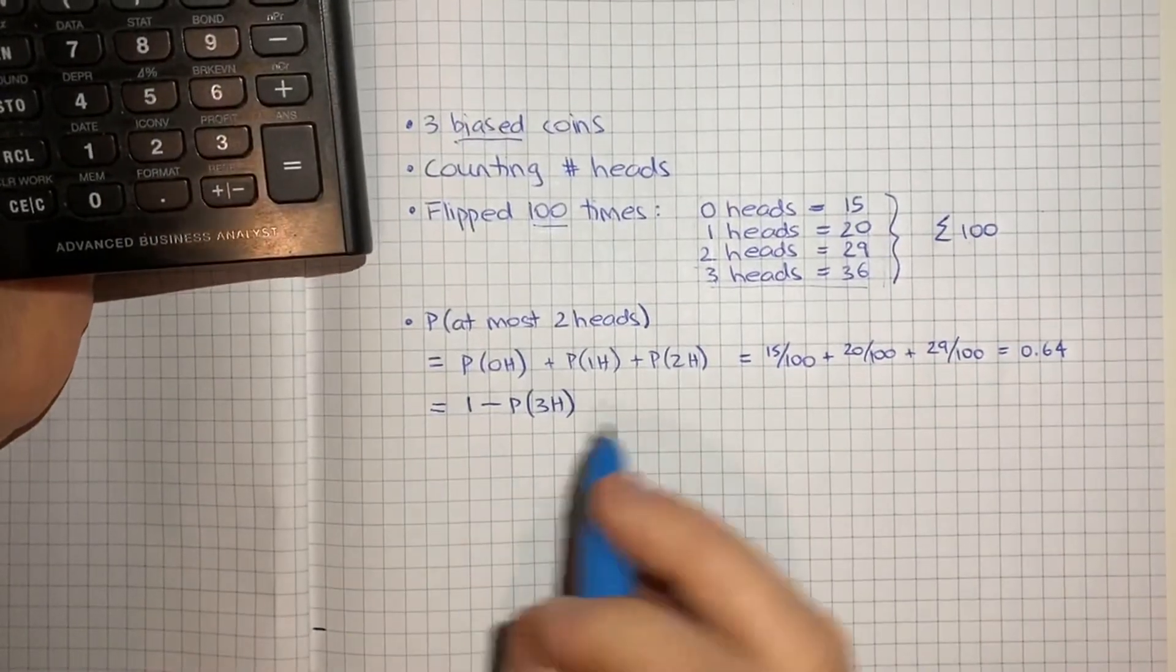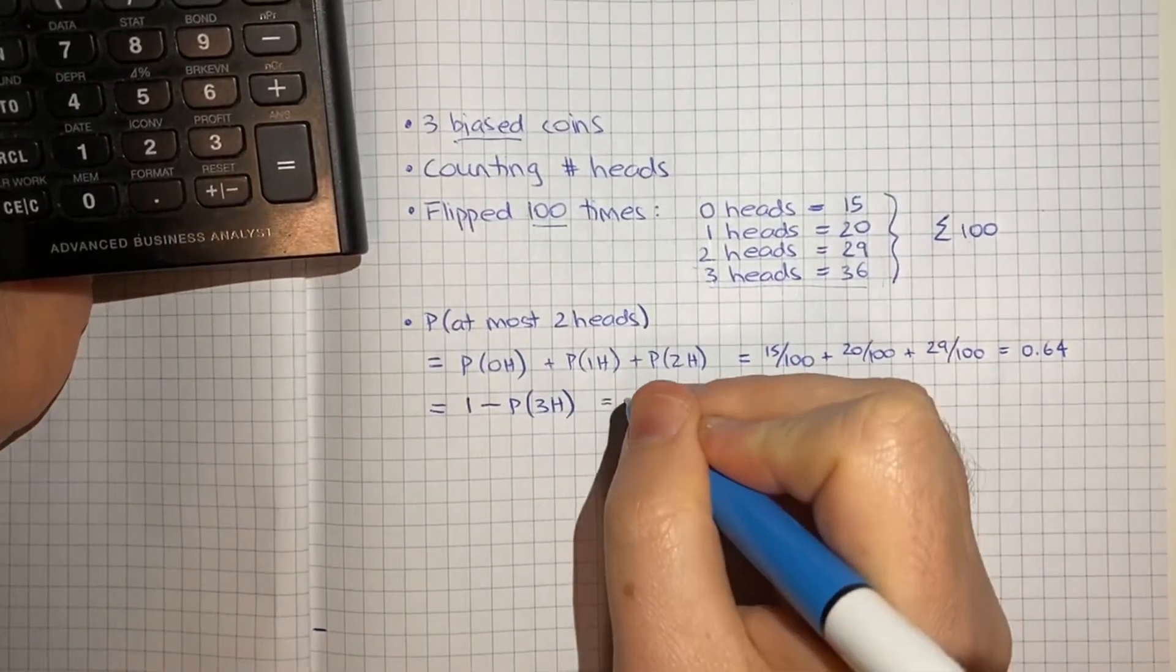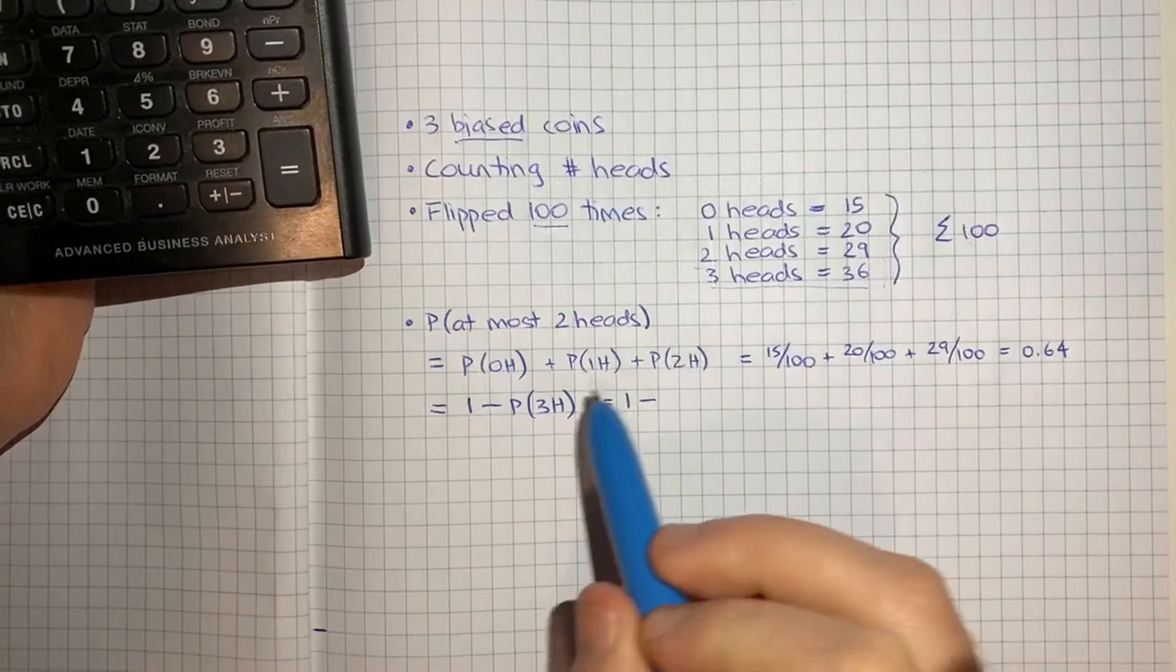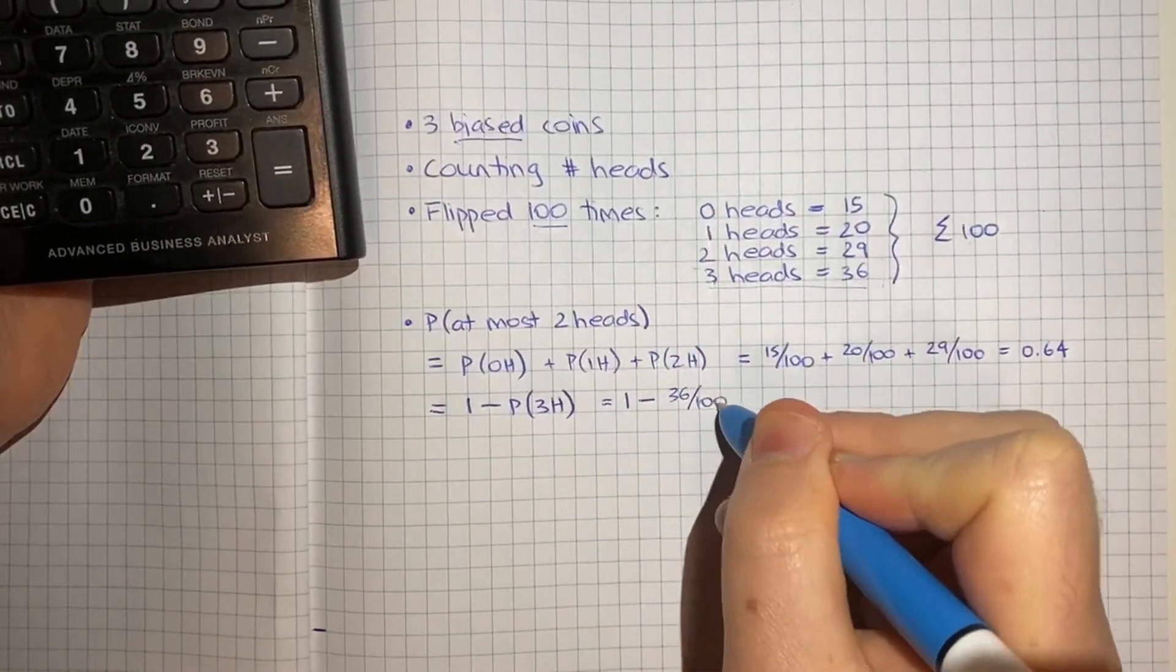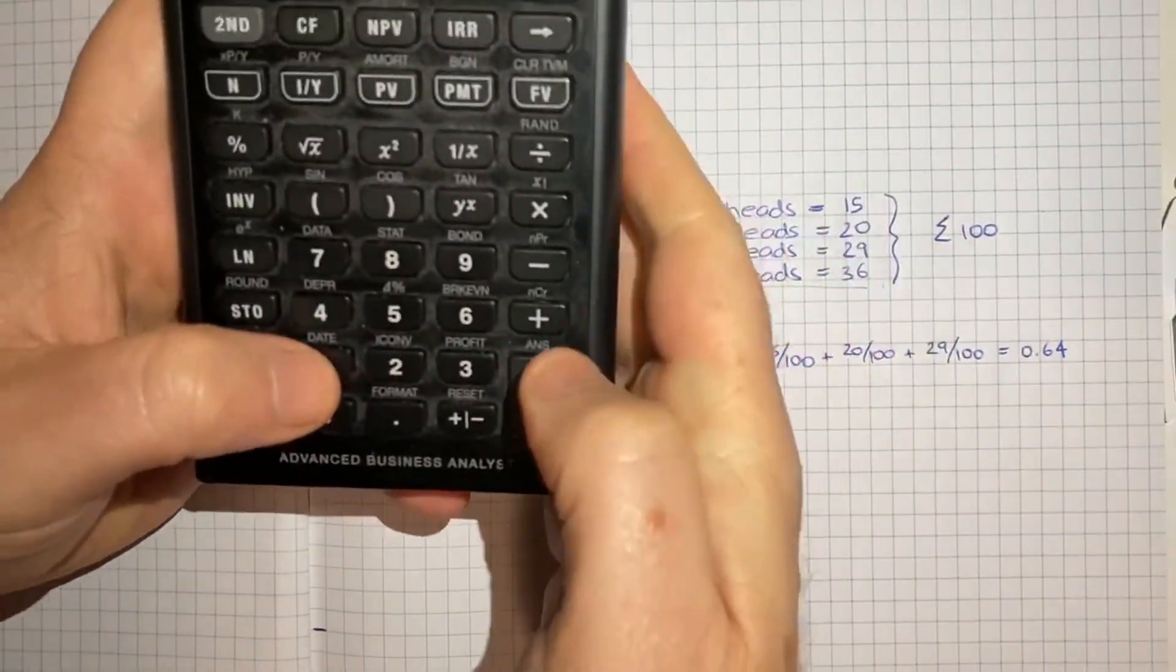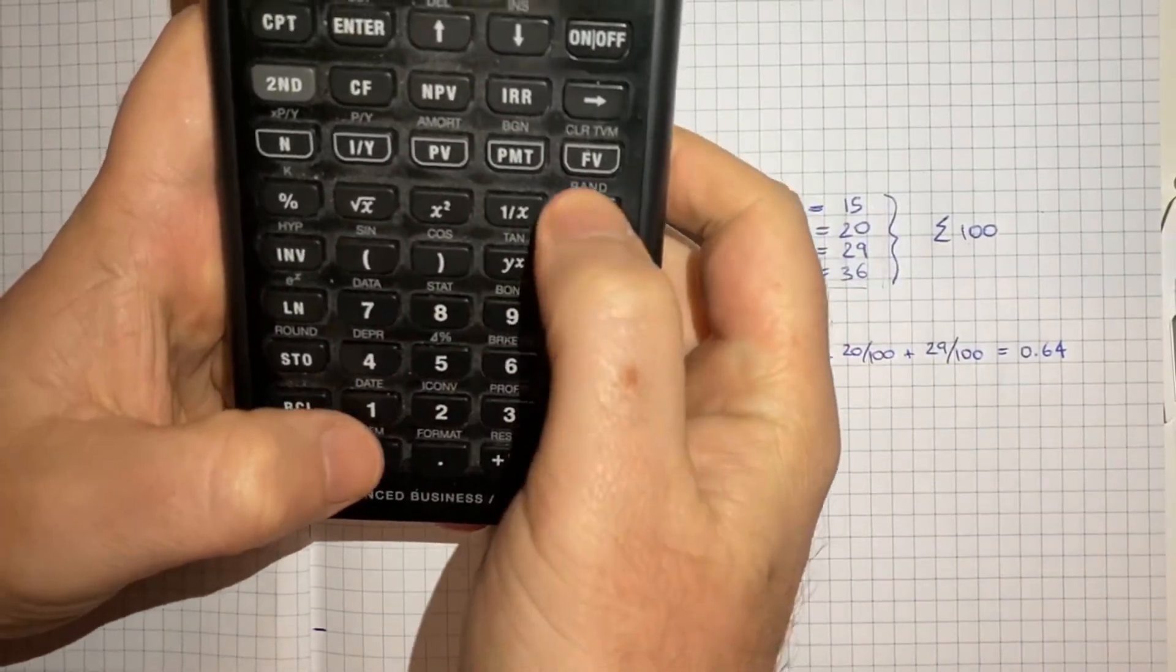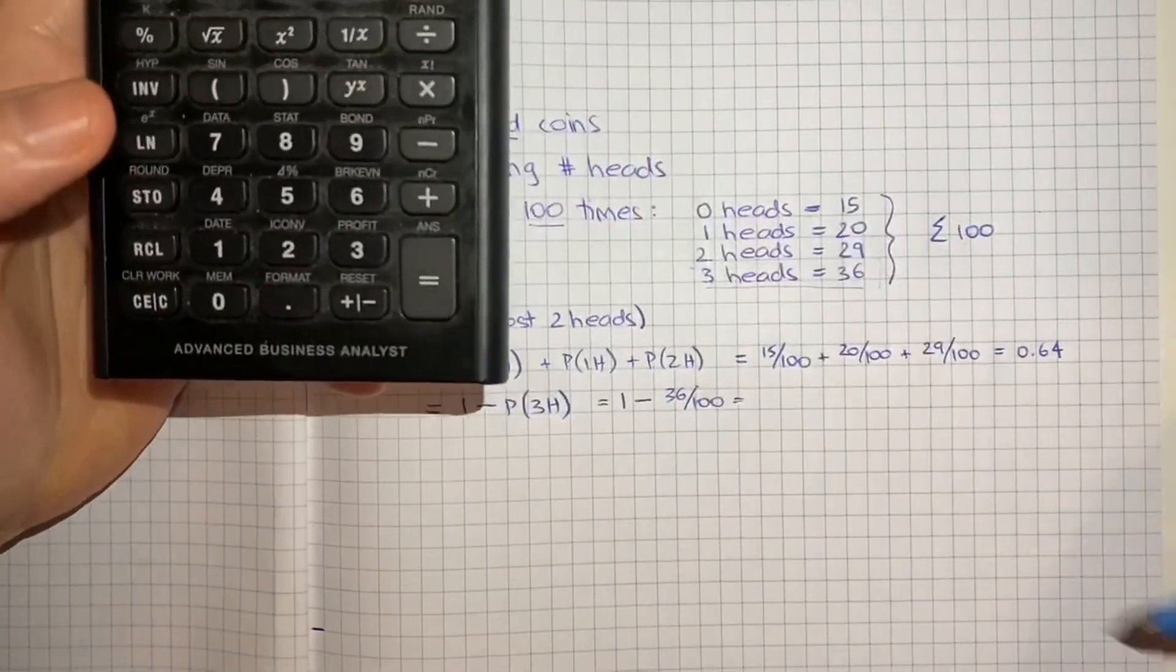Now, if I instead take this second approach, what we'll do is we get 1 minus, and the probability of three heads is 36 on 100, which equals 1 minus 36 divided by 100, 0.64.